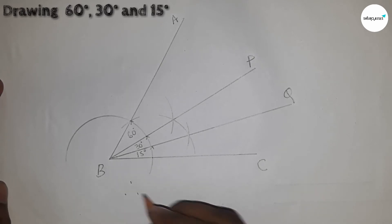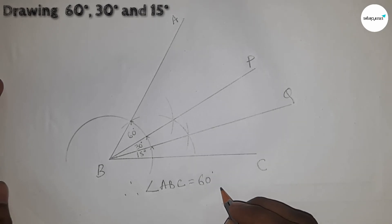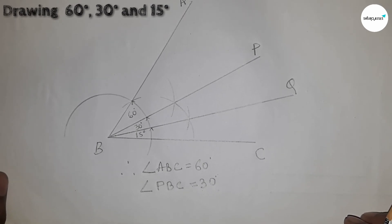Now therefore angle ABC equal 60 degree angle. Angle PBC equal 30 degree angle. And angle QBC equal 15 degree angle. Thanks for watching.